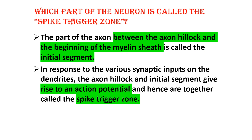The part of the axon between the axon hillock and the beginning of the myelin sheath is known as the initial segment. In response to various synaptic inputs on the dendrites, the axon hillock and initial segment give rise to the action potential, and hence are together called the spike trigger zone.